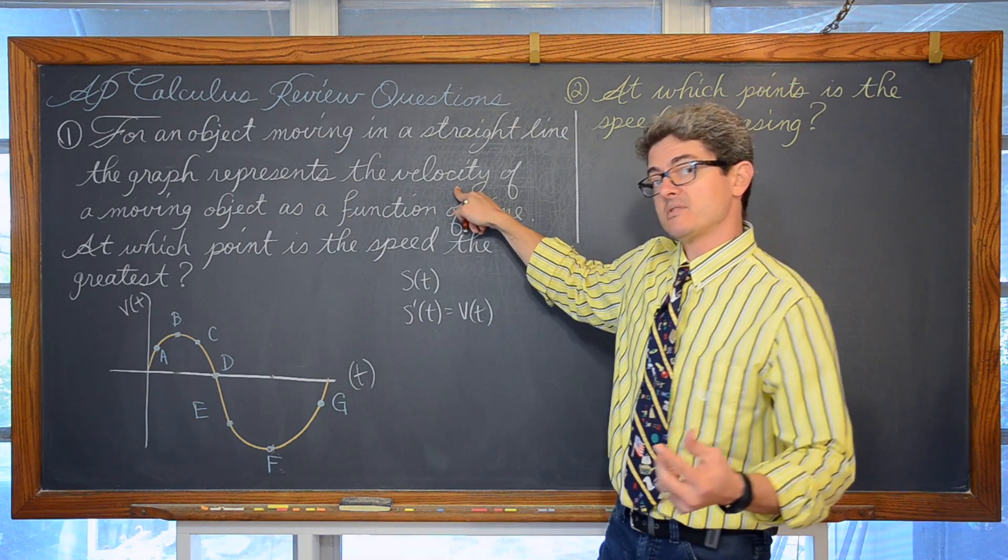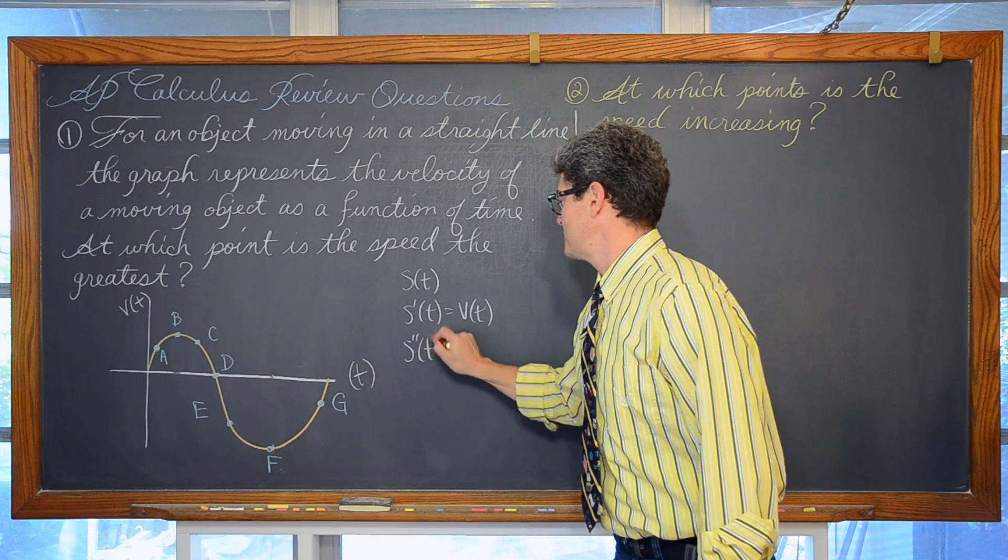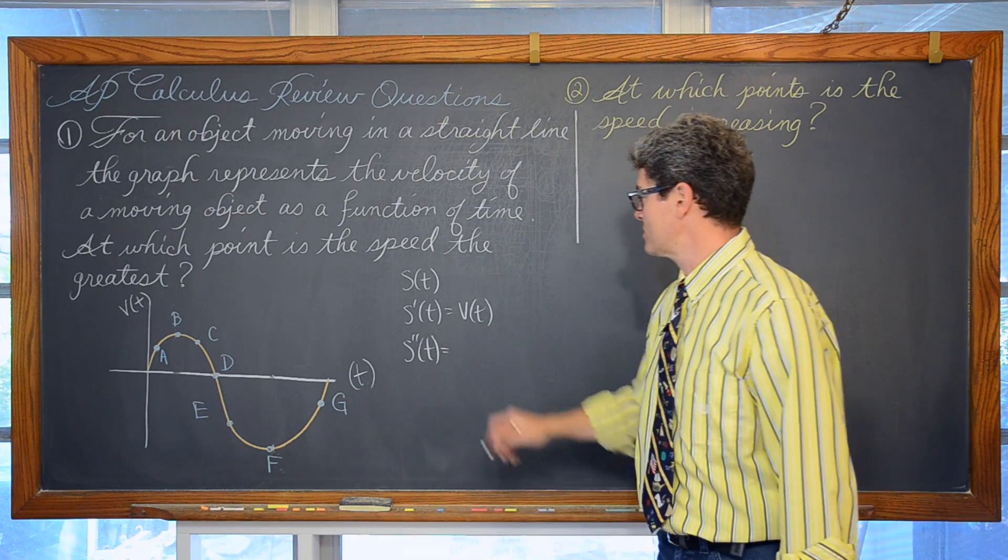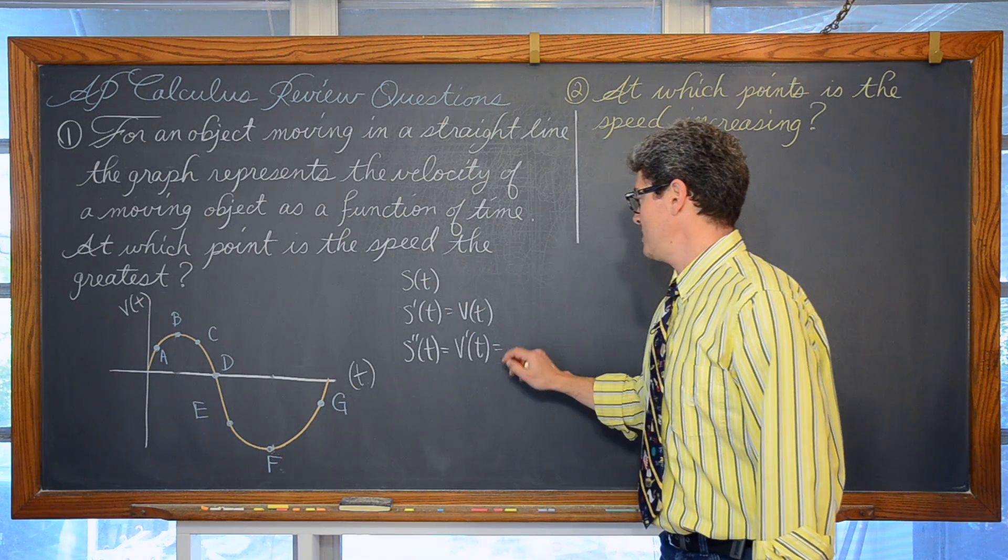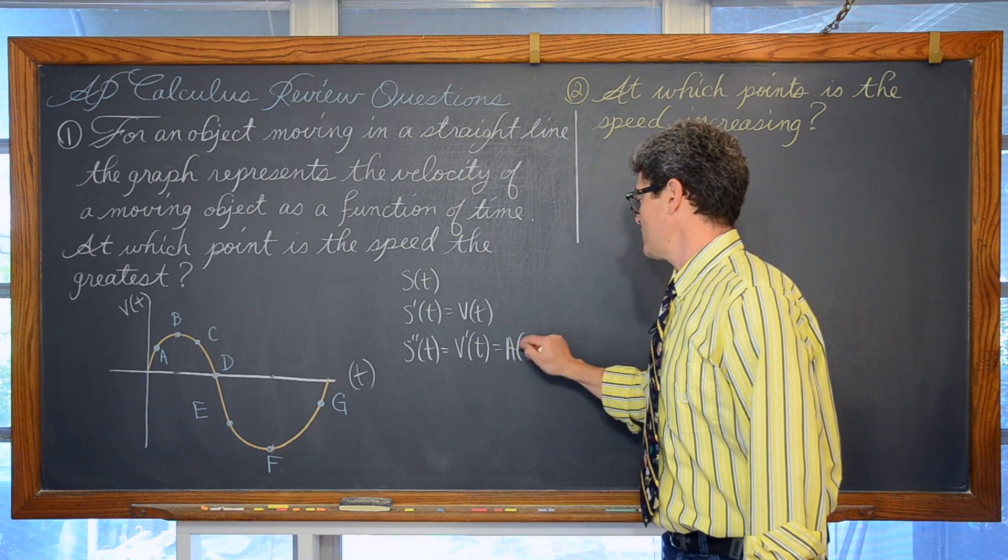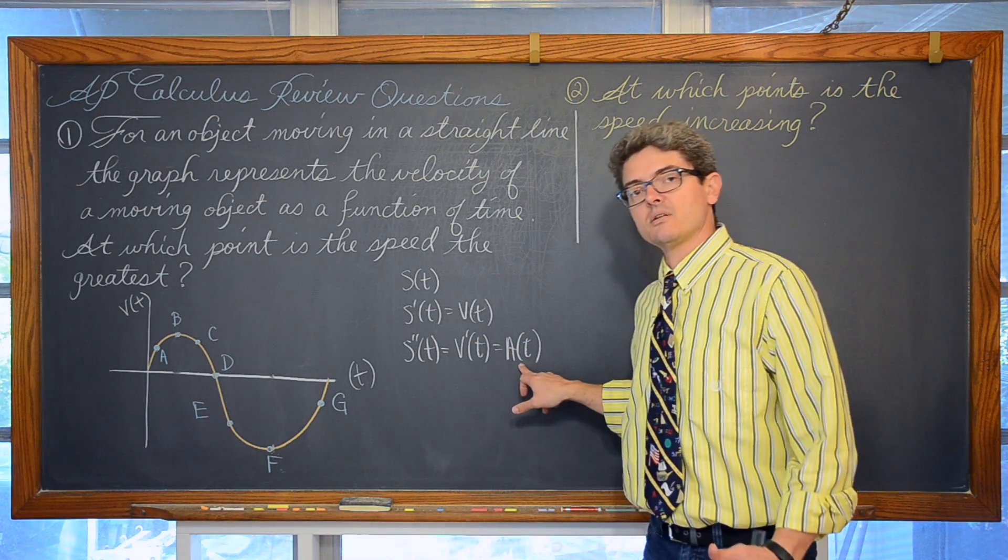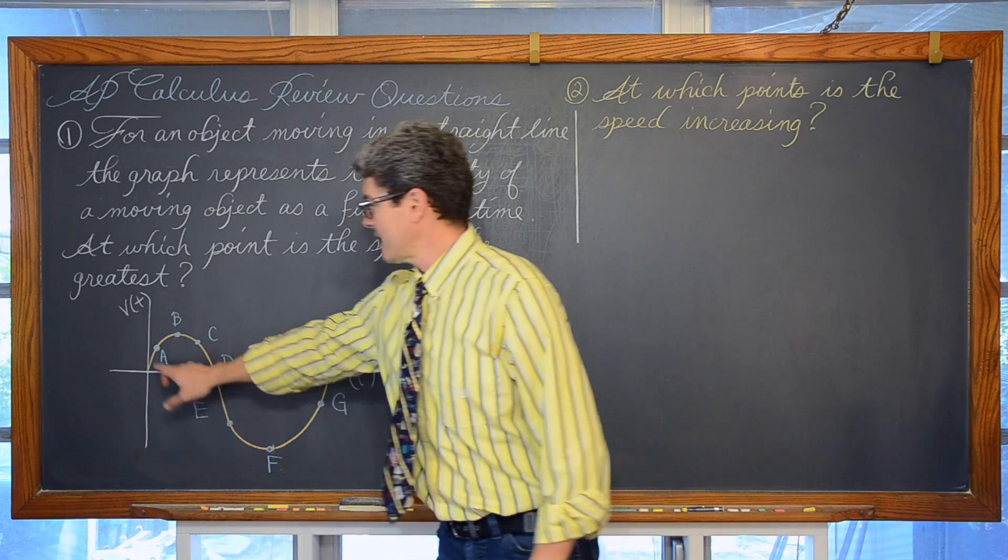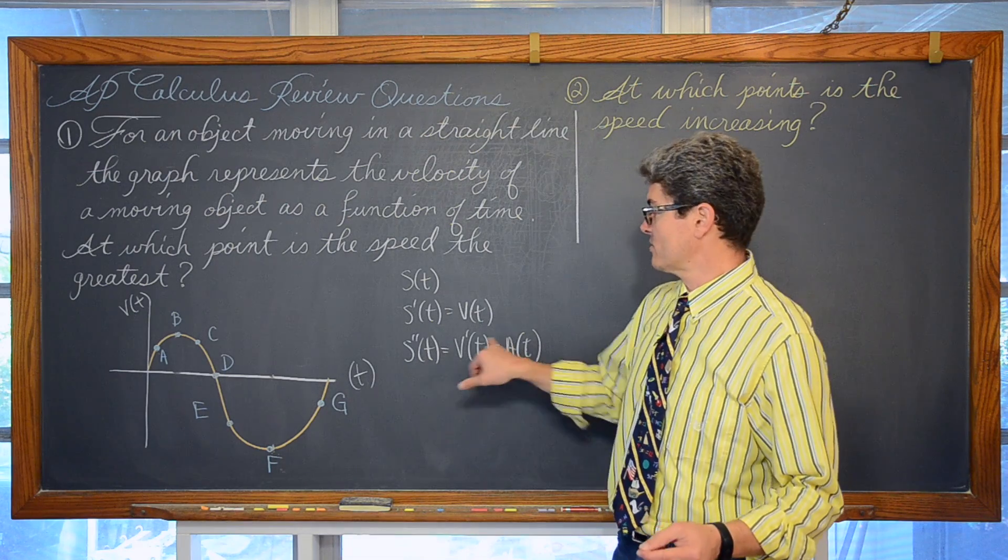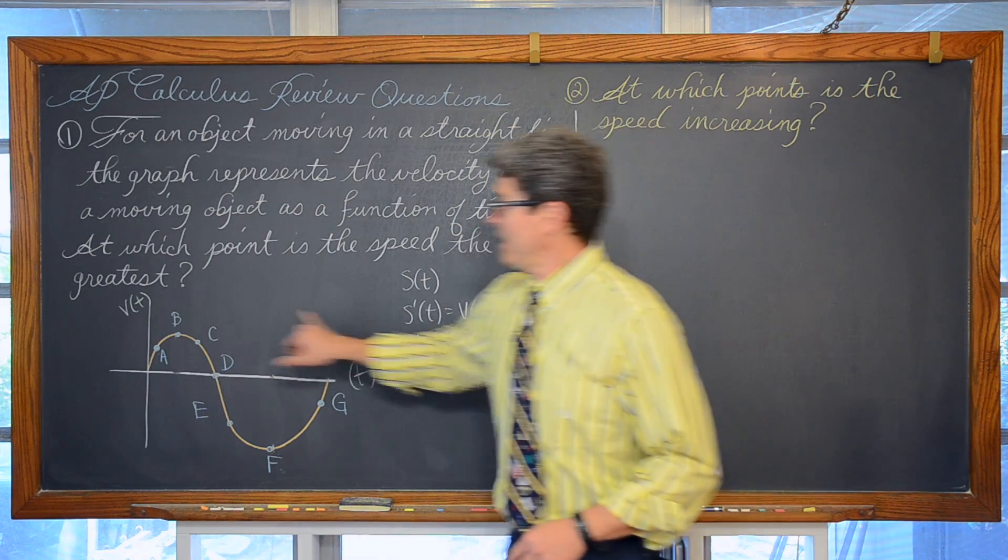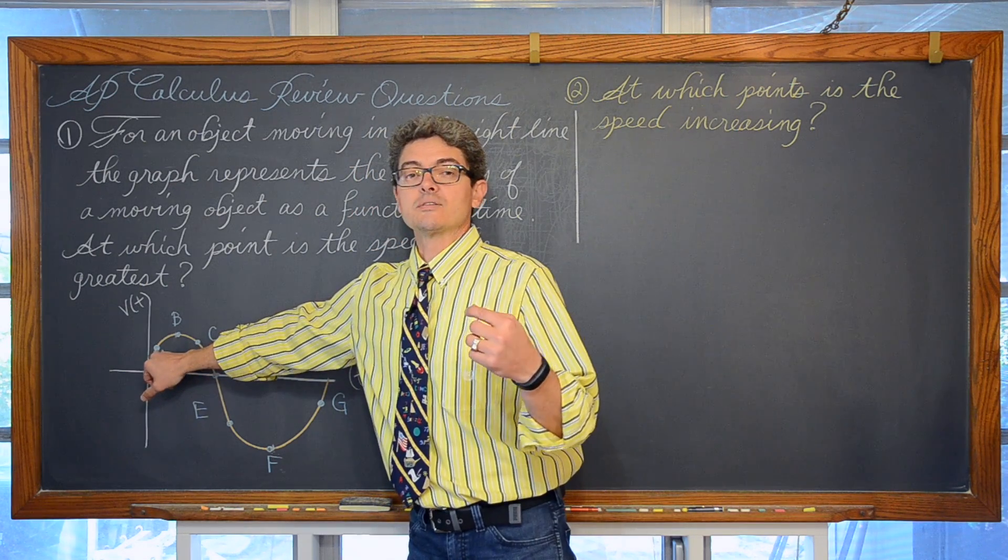And then s double prime of t is equal to the derivative or the first derivative of velocity which is equal to acceleration. So we need the velocity and the acceleration to have the same sign. Well, like at point a the velocity is positive. And since acceleration is the derivative of velocity and this has a positive slope, at point a not only is the velocity positive but so is the acceleration. So at point a your speed is going to be increasing.